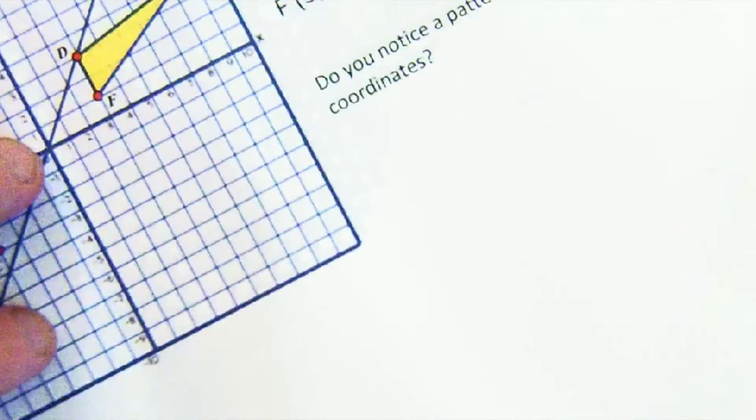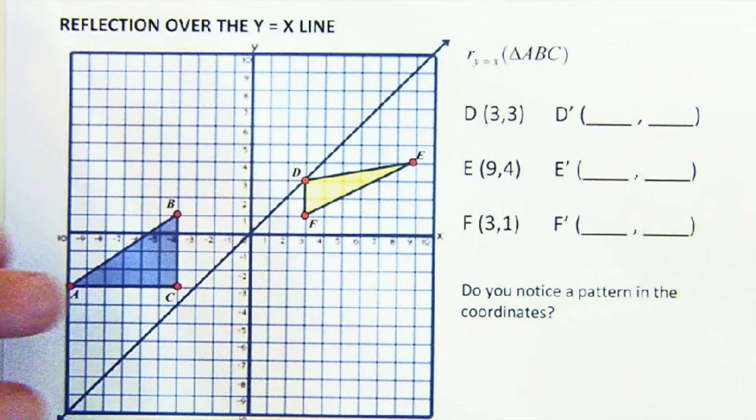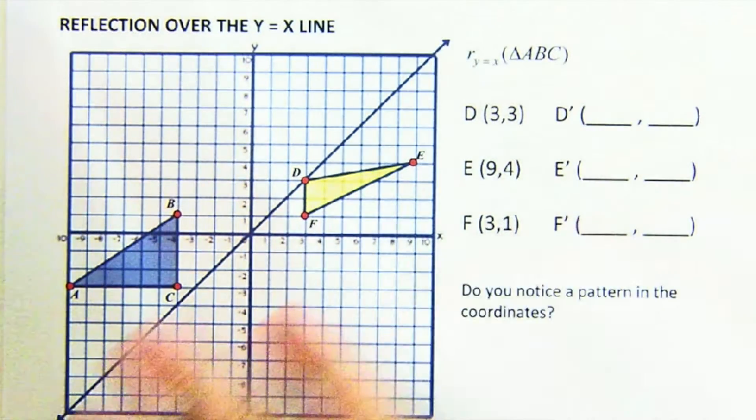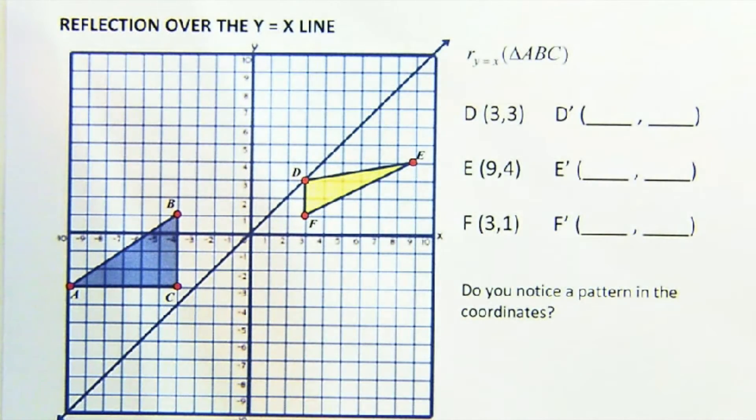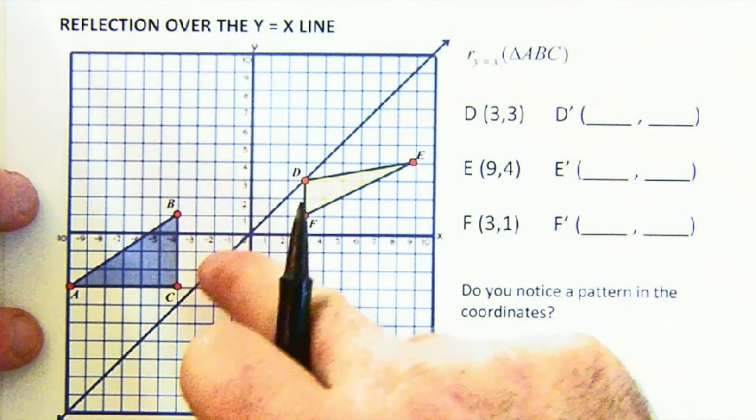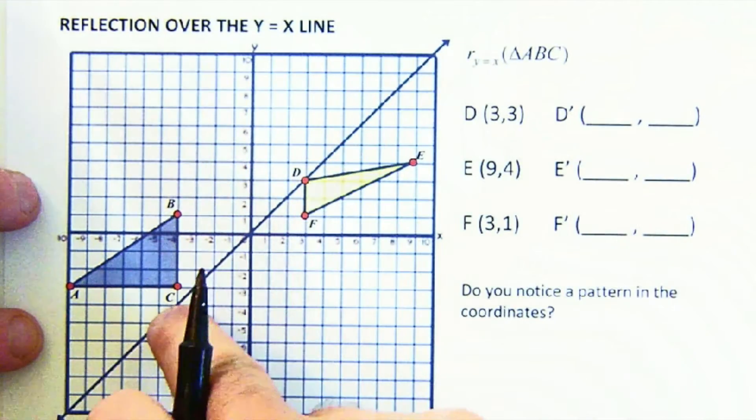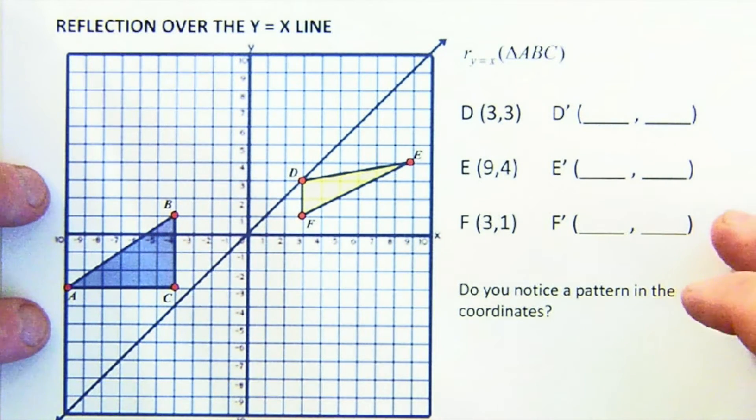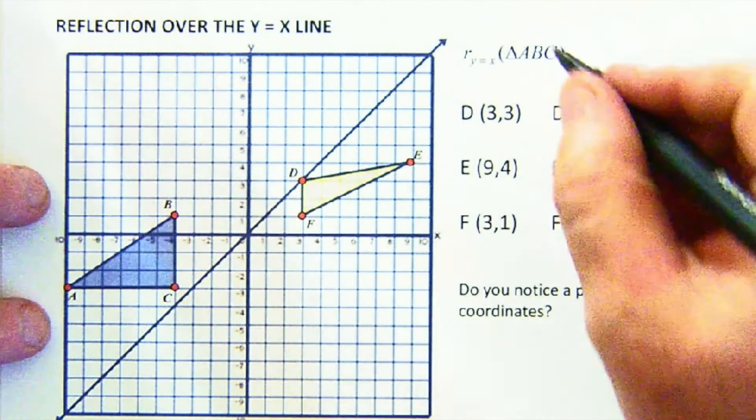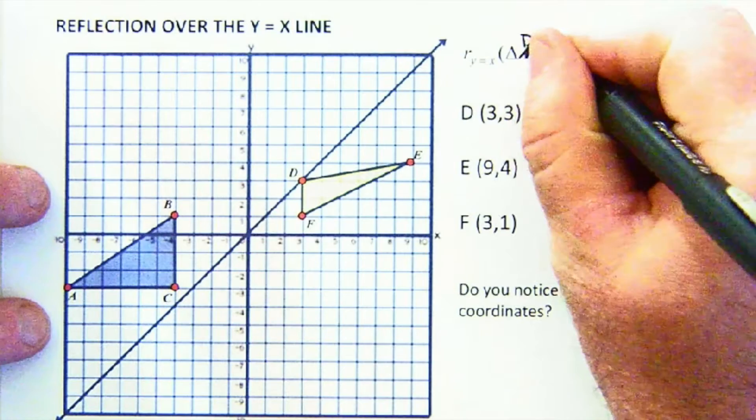The third side that we want to look at is that of a reflection over the y equals x line. Now, y equals x is a fun line because it's not vertical or horizontal. It's got a slope there of 1. This is a line that has all of its points x equaling y. 3, 3, 5, 5, 7, 7, negative 2, negative 2, and so on. So let's do a reflection here of D, E, F. That's where we want to reflect.